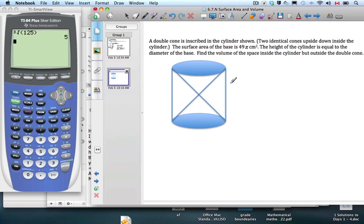All right. Let's hammer out one more example. A double cone is inscribed in the cylinder shown. Two identical cones upside down inside the cylinder. The surface area of the base is 49 pi centimeters squared. So one of those blue things is 49 centimeters squared. The height of the cylinder is equal to the diameter of the base. Let's call that x. So find the volume of the space inside the cylinder, but outside the double cones.